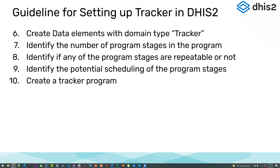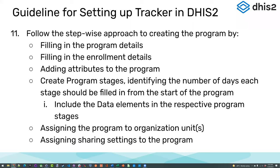Then we're going to create our data elements — I really hope everyone is familiar with creating data elements at this point. We'll then work on defining the program from our design document, whether it's an Excel sheet or another type of document. We'd identify how many program stages there are, whether there are any repeatable stages, and whether there's scheduling associated with the stages. If there's a sequence of events and we know the rough time frame between them, we can create a schedule. Then we actually create our tracker program inside of DHIS2, following this stepwise approach.